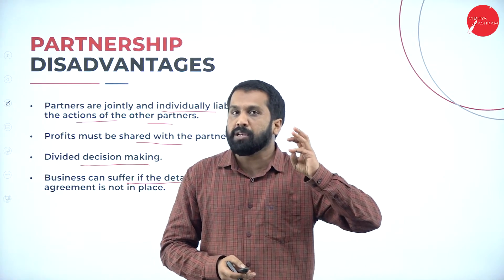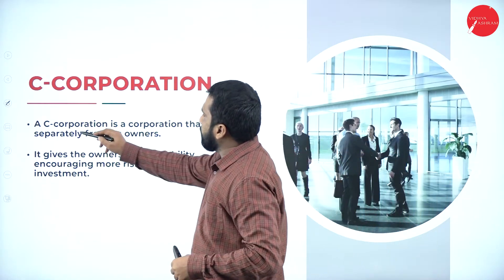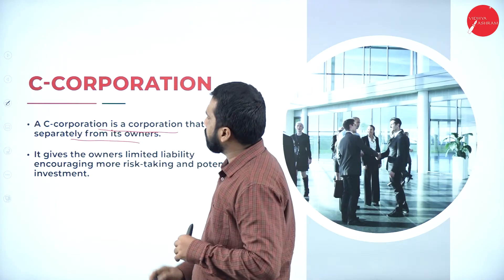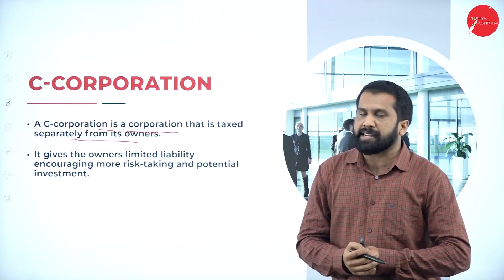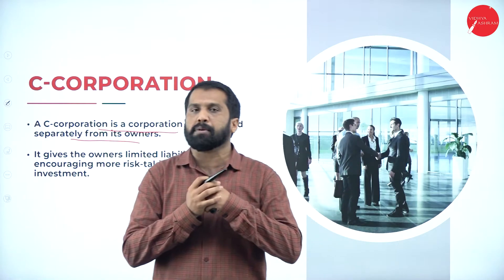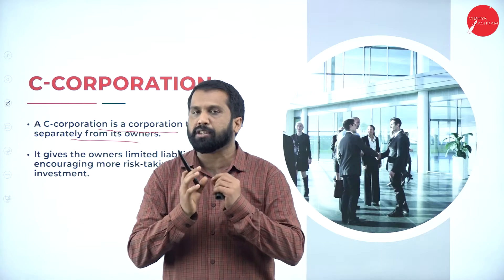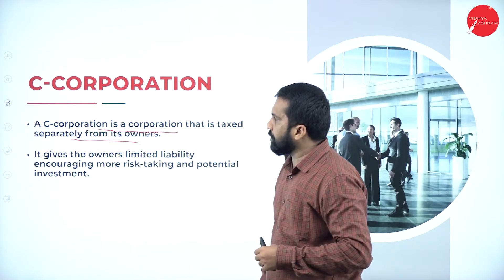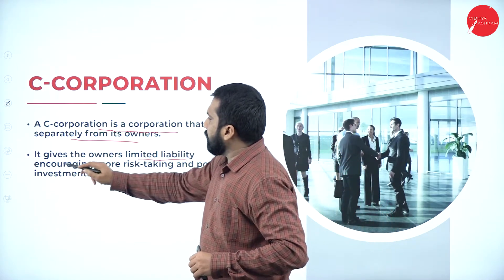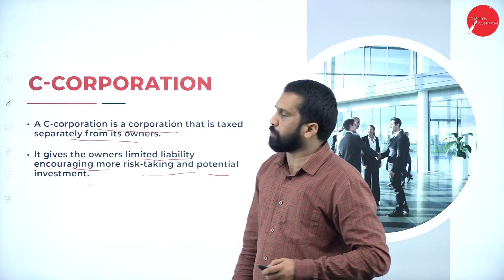C corporation: a C corporation is a corporation that is taxed separately from its owners. For example, Vidyashram — whatever happens, it is not in the name of the individual owner. Even though he is the proprietor and owner, Vidyashram has to pay tax in the name of Vidyashram only. That is called a C corporation. It gives the owners limited liability, encouraging more risk-taking and potential investment.